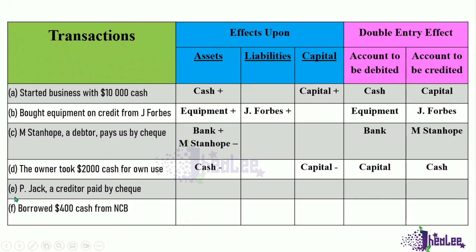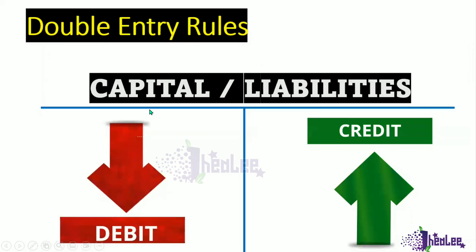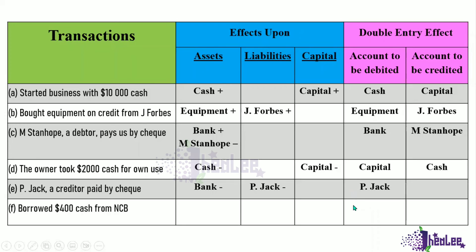Transaction E: P-Jack, a creditor, paid by check. The two items affected are bank and P-Jack. There is a reduction in bank, and there is a reduction in what we owe to P-Jack, which is a liability. When liability decreases, you debit. So P-Jack is debited, and automatically the item to be credited is bank.